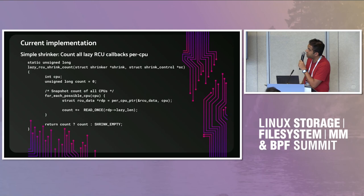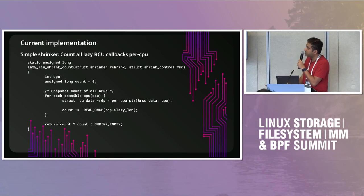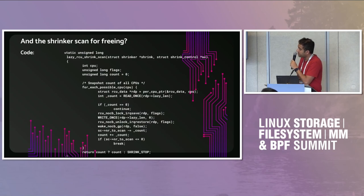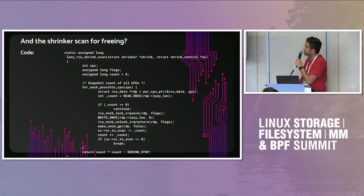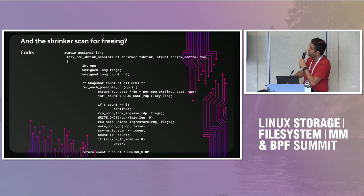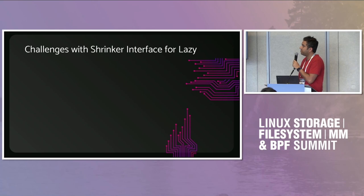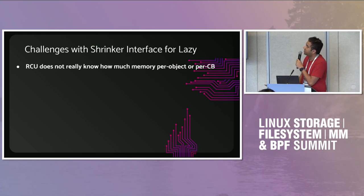This is what the shrinker implementation looks like. The count function goes through all CPUs, adds up the number of lazy callbacks on each CPU, and returns the count. The scan function iterates over each CPU's list and breaks out of the loop as soon as we've moved enough callbacks forward to satisfy the requested number. It's pretty simple — but this mechanism is terrible for detecting memory pressure. There are many issues with it, and this is where I want your input.